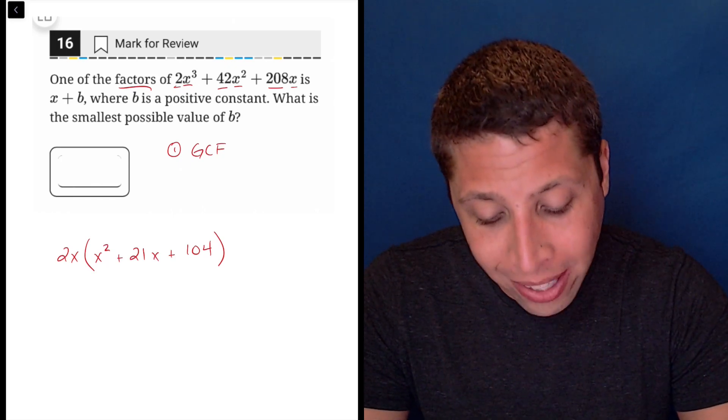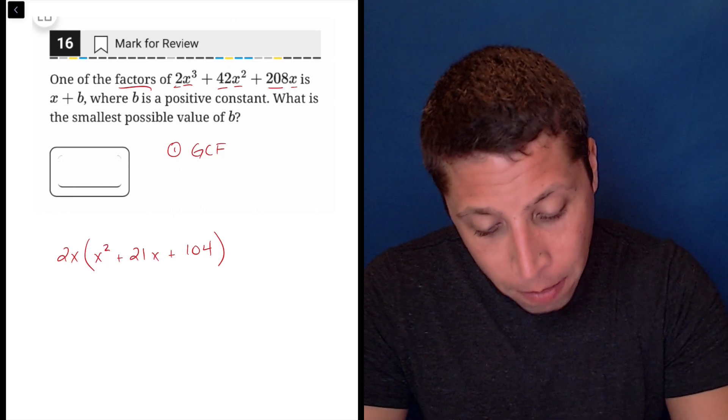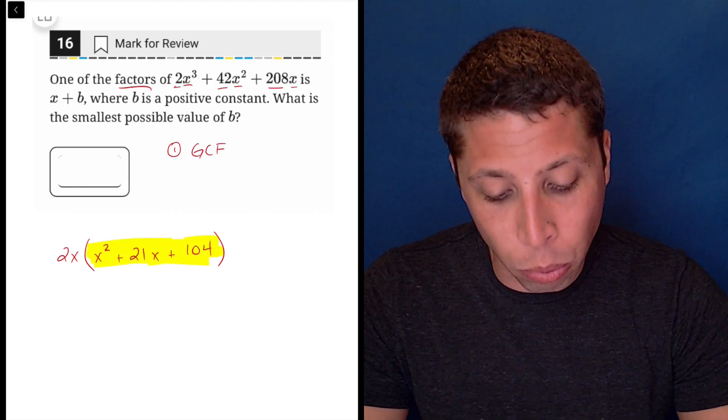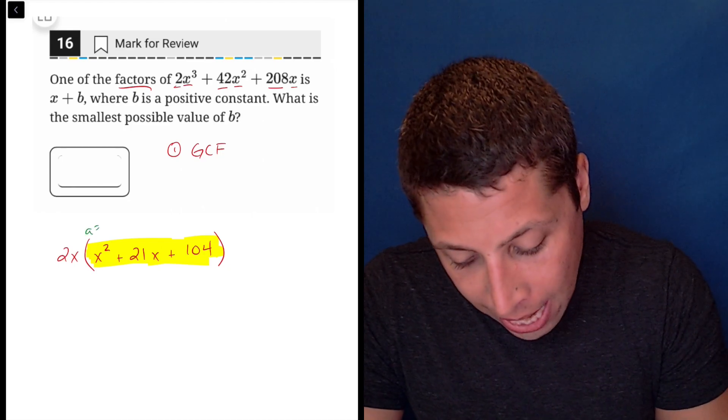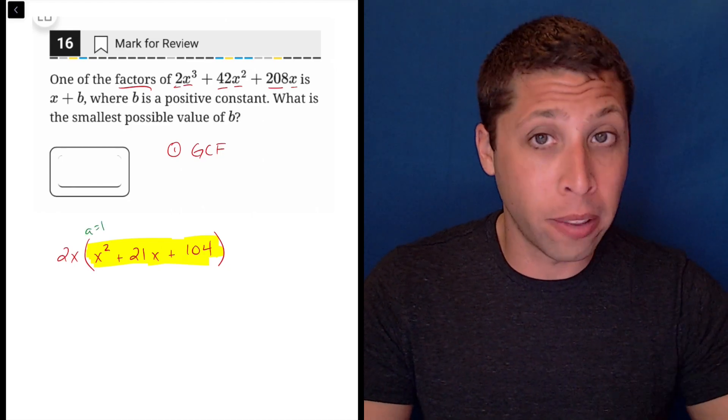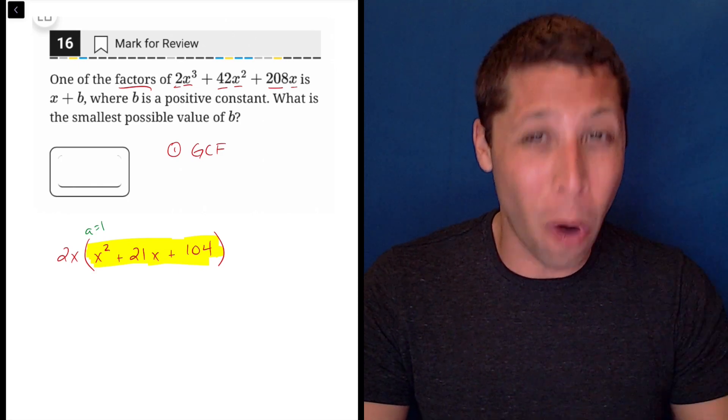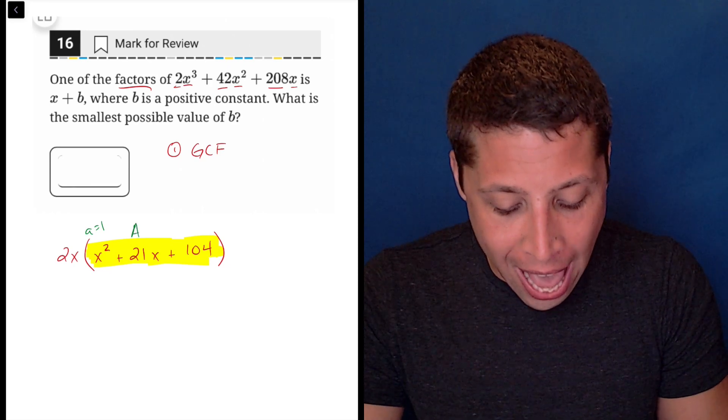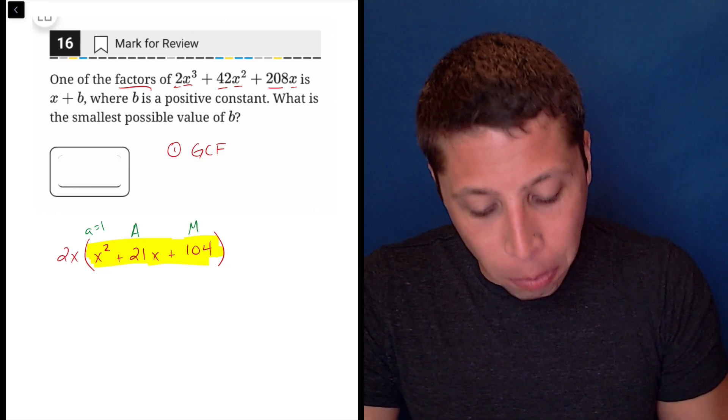I still need to factor this quadratic, but at least it's following the normal rules. I have an a equals 1 situation, meaning there's no number in front of the x squared. So I'm looking for two numbers that add to 21 and multiply to 104.